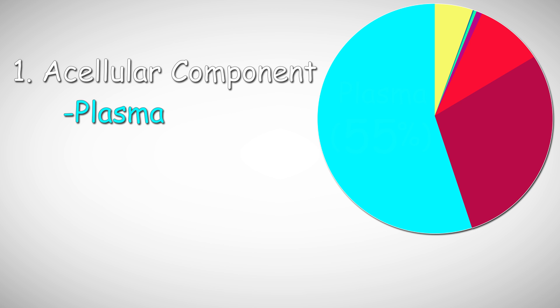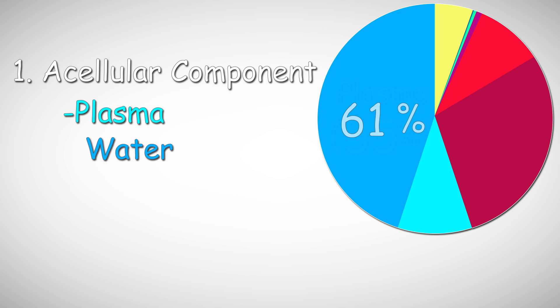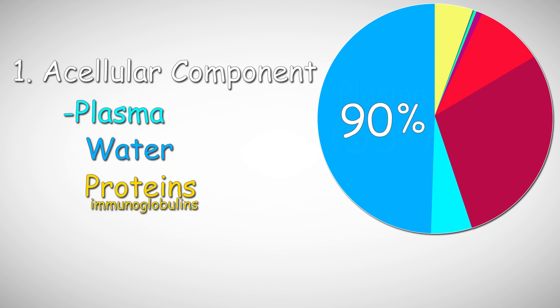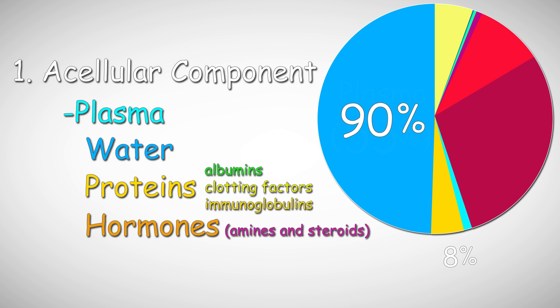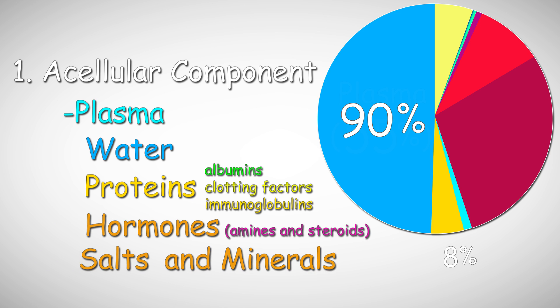The plasma is also composed of different compounds. These are water, being the largest at about 90%; proteins, which consist of albumin, clotting factors, and immunoglobulins at around 8%; hormones, which include amines and steroids; and salts and minerals, at about 2% of the plasma volume.